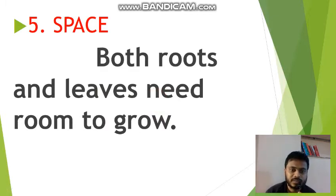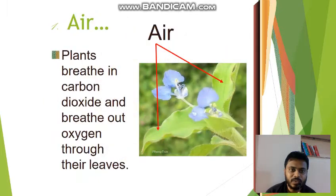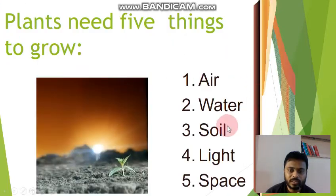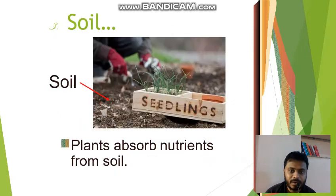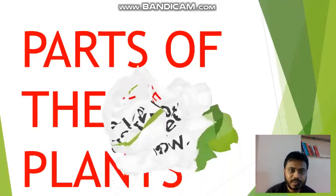All these five things plants need to grow: air, water, soil, light, and space. Now we will see about parts of the plant.